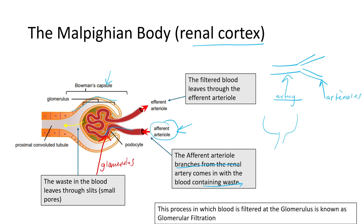The blood with waste products enters the afferent arteriole and then goes into the glomerulus. When it reaches the glomerulus, the blood is filtered — the waste diffuses out of the blood and passes into the proximal convoluted tubule.